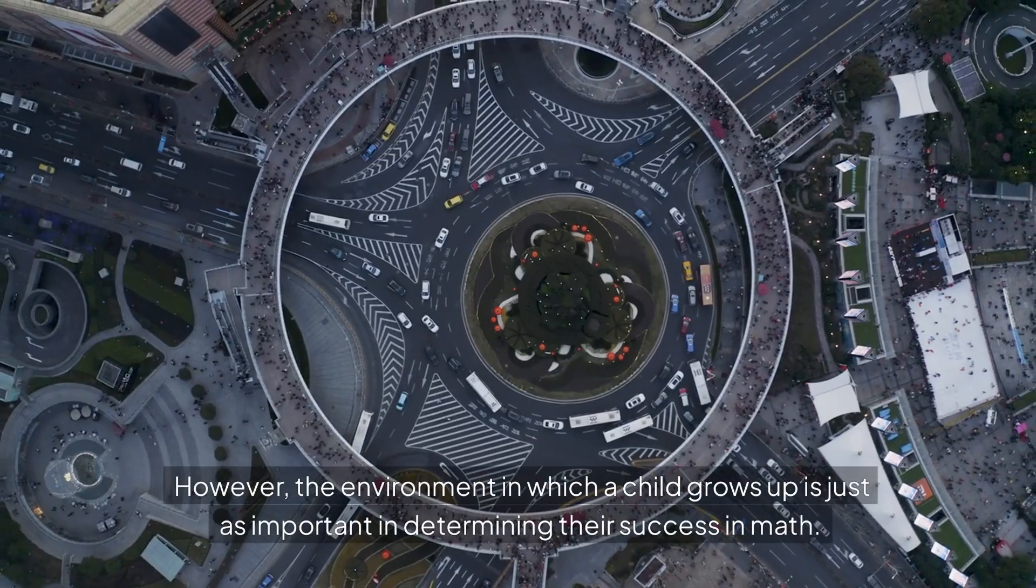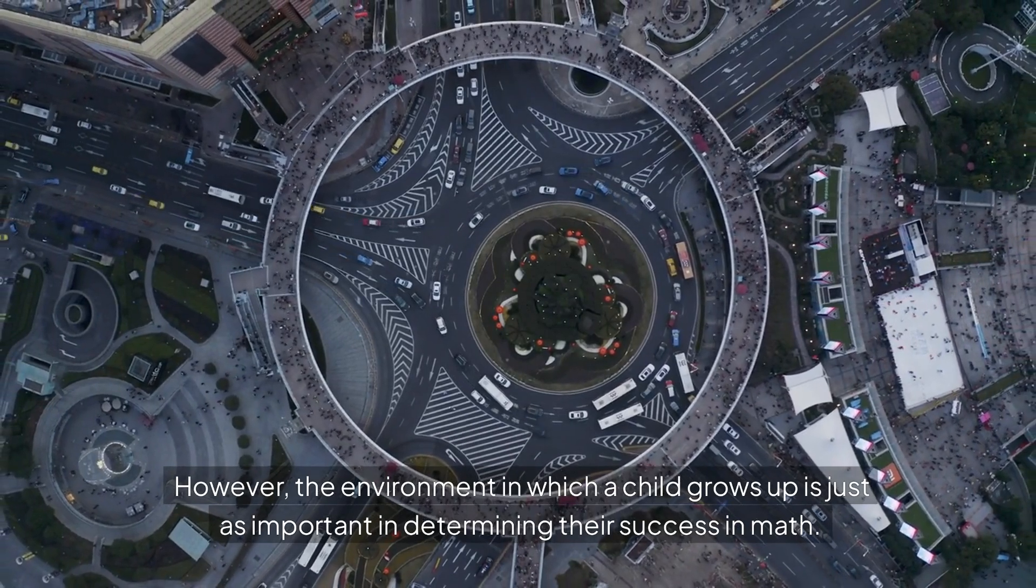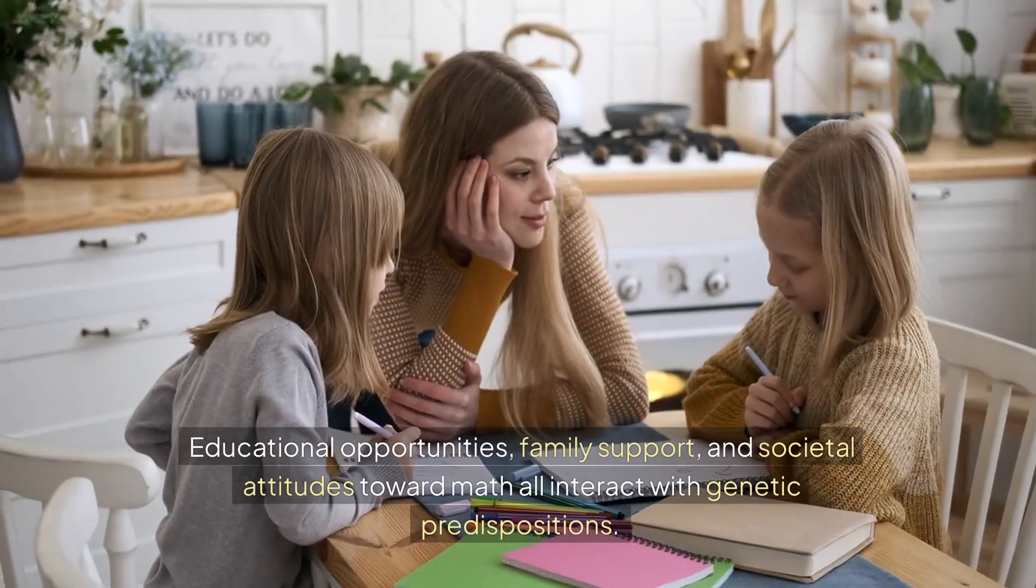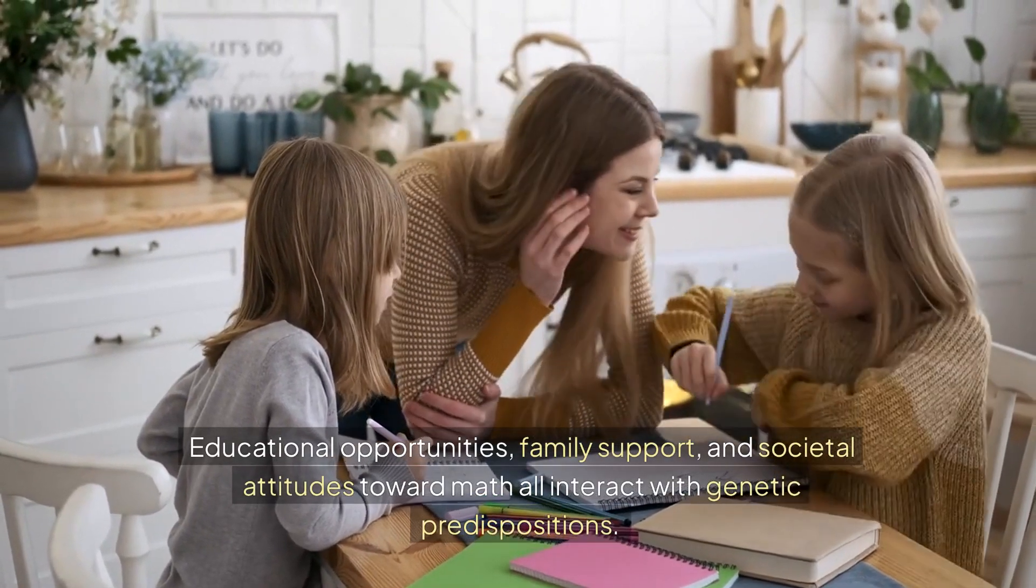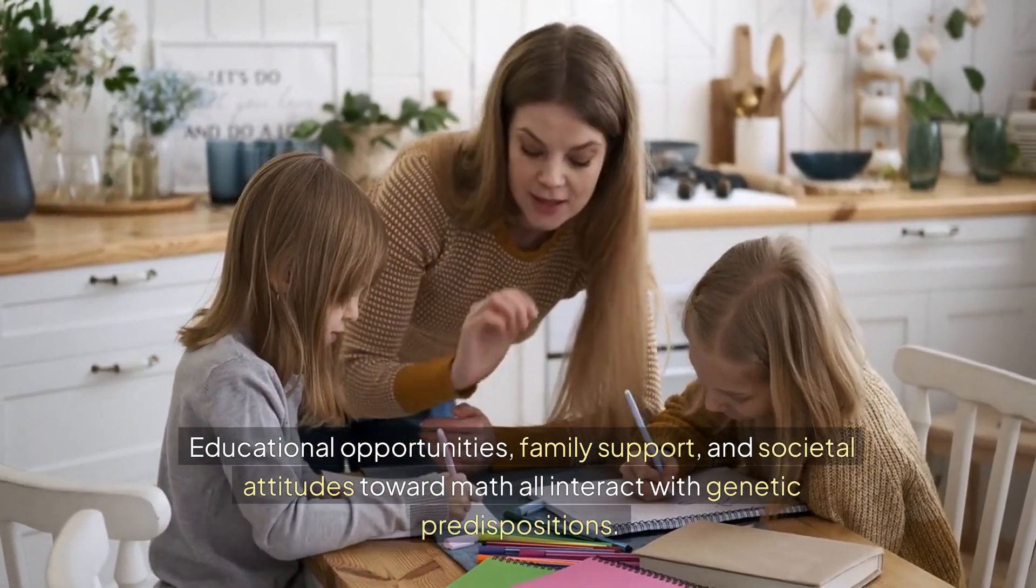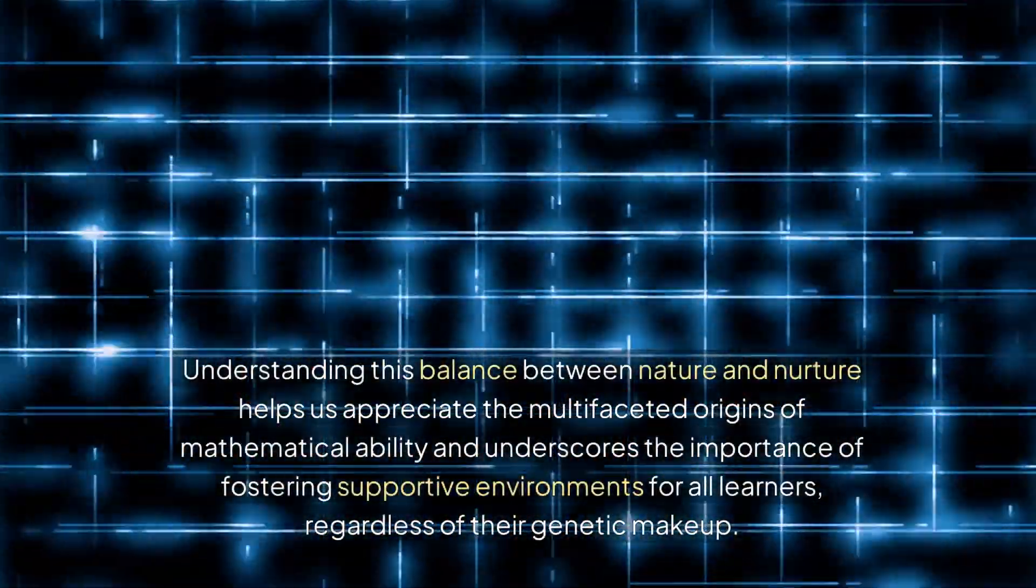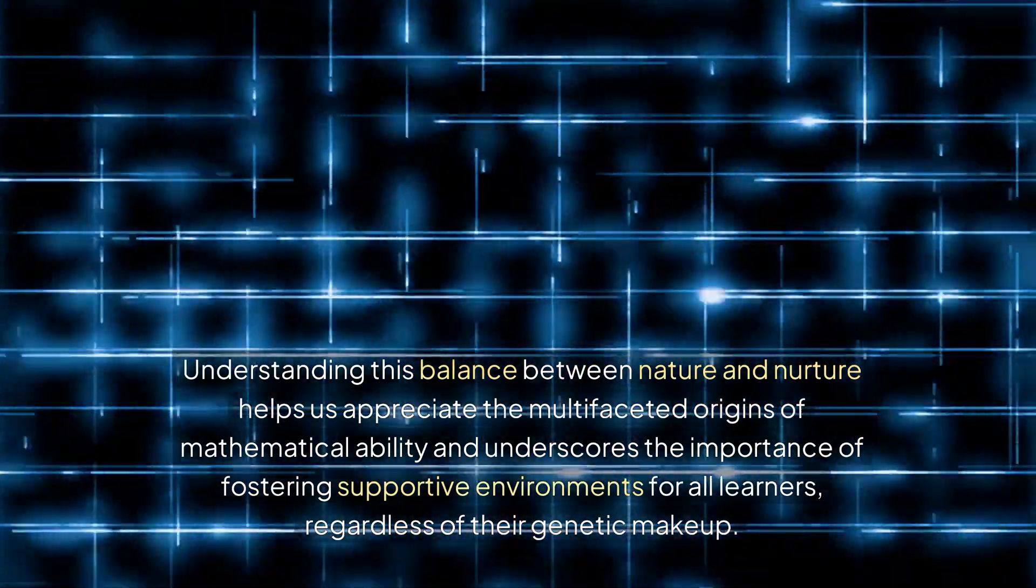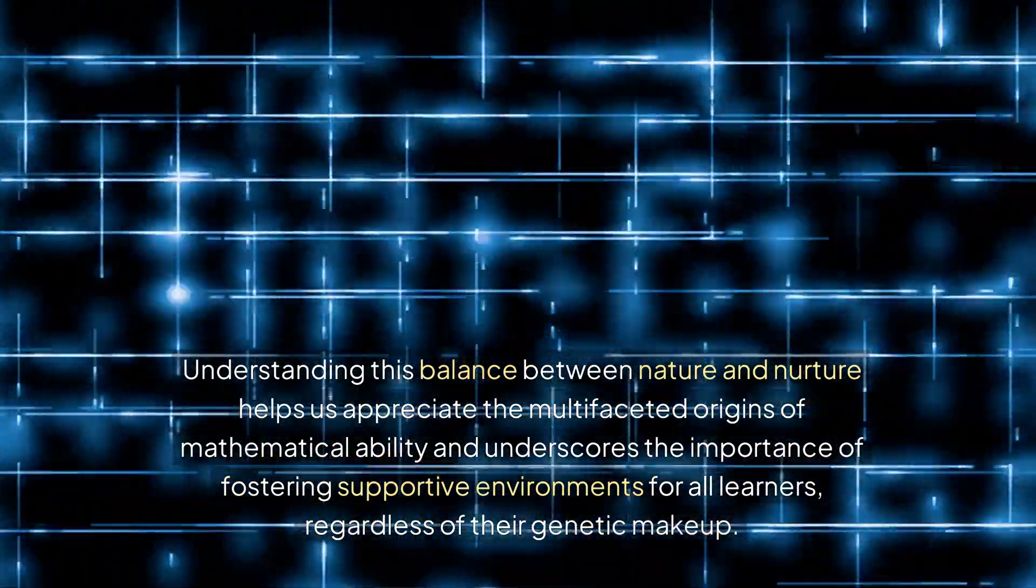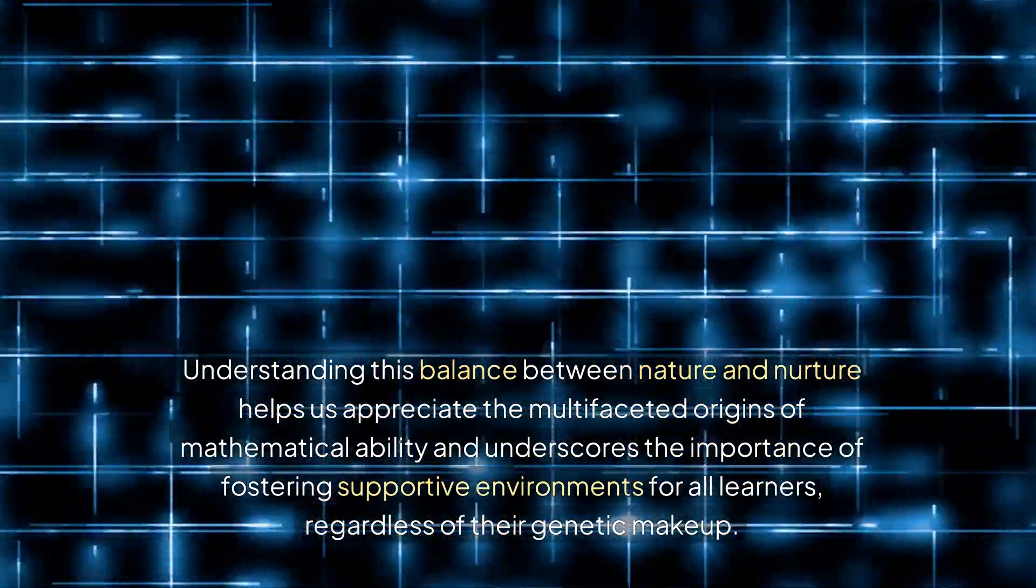However, the environment in which a child grows up is just as important in determining their success in math. Educational opportunities, family support, and societal attitudes toward math all interact with genetic predispositions. Understanding this balance between nature and nurture helps us appreciate the multifaceted origins of mathematical ability and underscores the importance of fostering supportive environments for all learners, regardless of their genetic makeup.